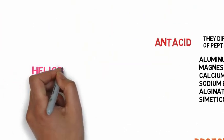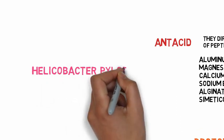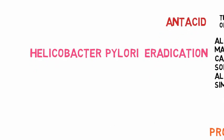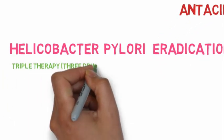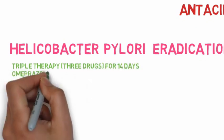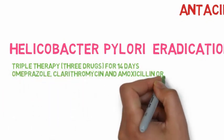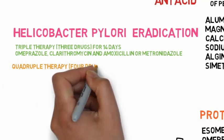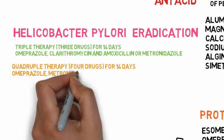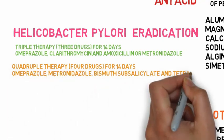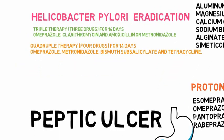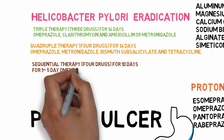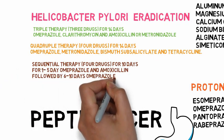Treatment for Helicobacter pylori eradication: the currently recommended treatment consists of a PPI and two or more antimicrobials. Triple therapy uses three drugs for 14 days: omeprazole, clarithromycin and amoxicillin or metronidazole. Quadruple therapy uses four drugs for 14 days: omeprazole, metronidazole, bismuth subsalicylate and tetracycline. Sequential therapy uses drugs for 10 days — days 1–5: omeprazole and amoxicillin, followed by days 6–10: omeprazole, clarithromycin and tinidazole.